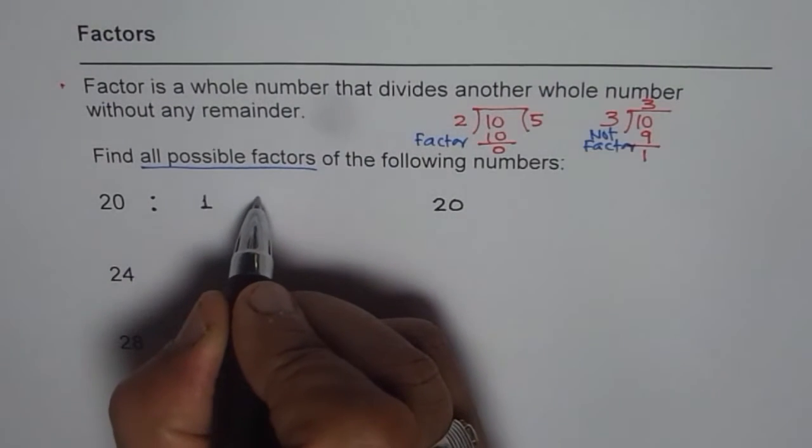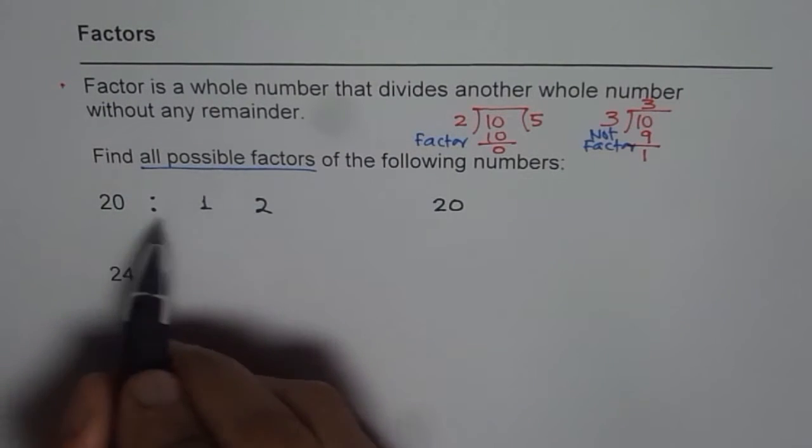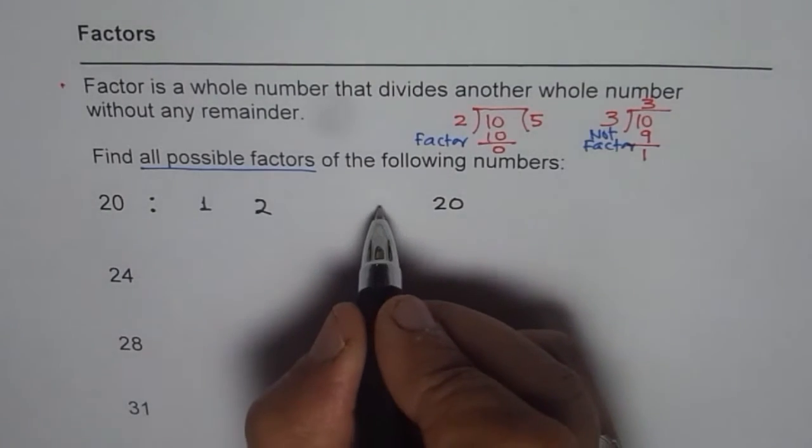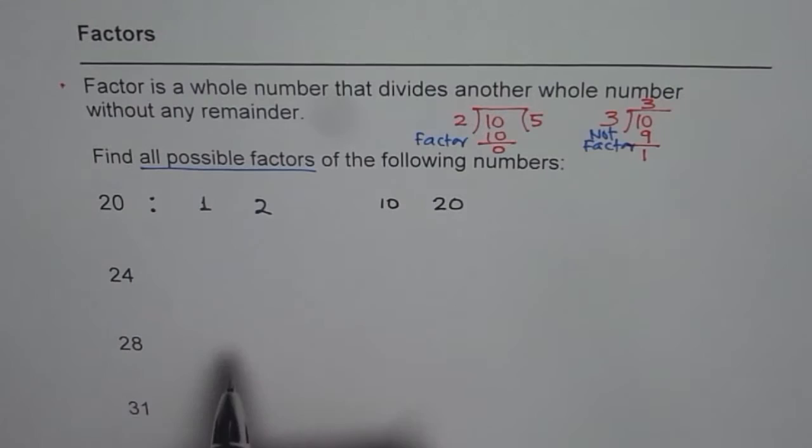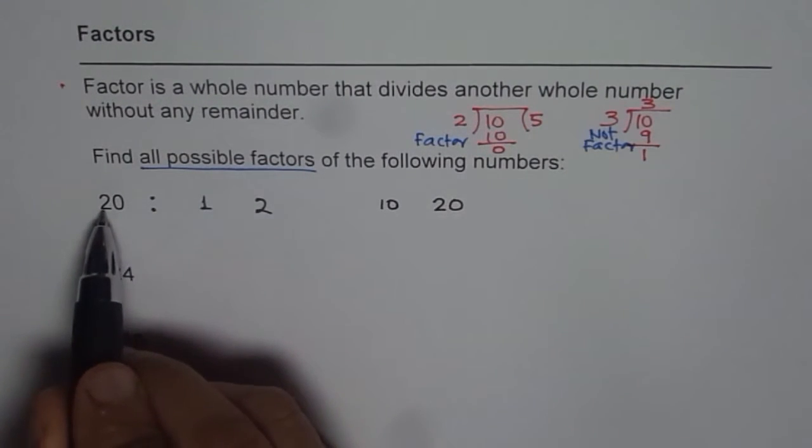So 2 goes how many times in 20? That means 20 gets divided by 2 without any remainder if I multiply 2 by 10. So that means 2 and 10 are both factors. Now 3: 2 plus 0 is 2 which cannot be divided by 3, so 3 is not a factor.